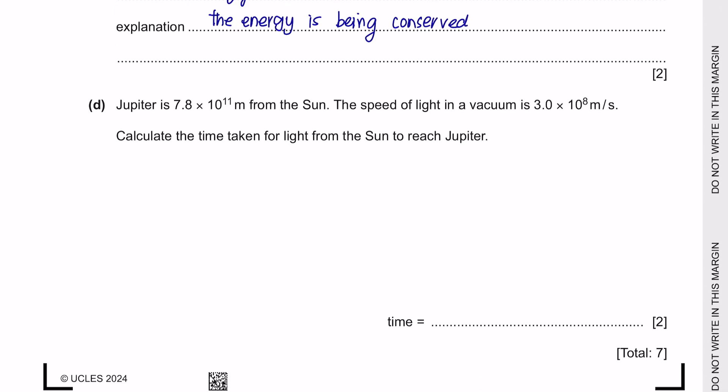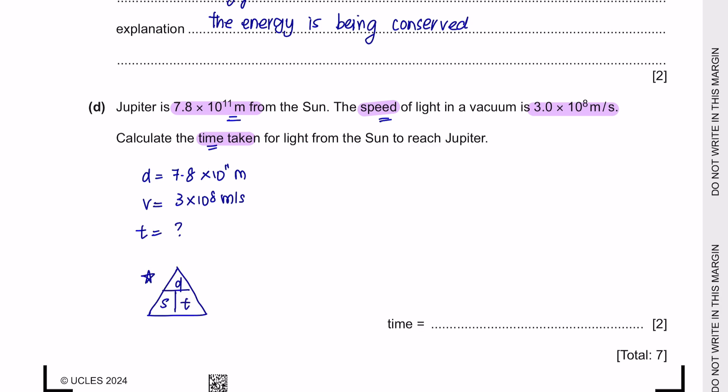Next question part D. Jupiter is 7.8 times 10 to the power of 11 meters from the sun. The speed of the light in vacuum is 3 times 10 to the power of 8 meters per second. Calculate the time taken for light to reach Jupiter. Now, we have got distance, speed, and we are looking to find time. The formula related to these three quantities is speed equals to distance over time. So, if we rearrange this formula to find time, it will be distance over speed. As you can see here, the units are both in meters. So, there is no need to change. Just put this in your calculator and we can get 2.6 times 10 to the power of 3. And the unit would be seconds.